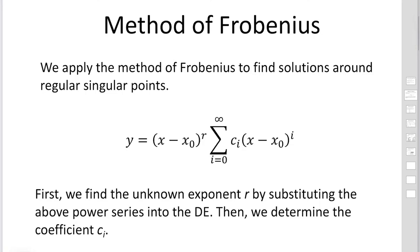We express the solutions as a power series. In this case, we multiply the terms by (x − x₀) to the power r, where r is an unknown parameter. The rest of the power series looks very similar to the power series used to solve differential equations around the ordinary point.